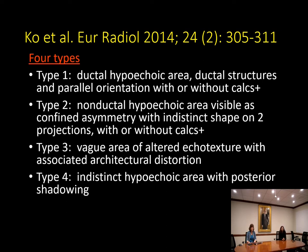Also in 2014, Coe and colleagues reported four proposed types of non-mass findings on ultrasound. Type 1 was a ductal hypoechoic area with parallel orientation, plus or minus calcifications. Type 2 was a non-ductal hypoechoic area visible as a confined asymmetry with a somewhat indistinct shape on two projections. Type 3 was a vague area of altered echotexture with associated architectural distortion — a term also common in clinical breast practice. Type 4 was an indistinct hypoechoic area with posterior shadowing.